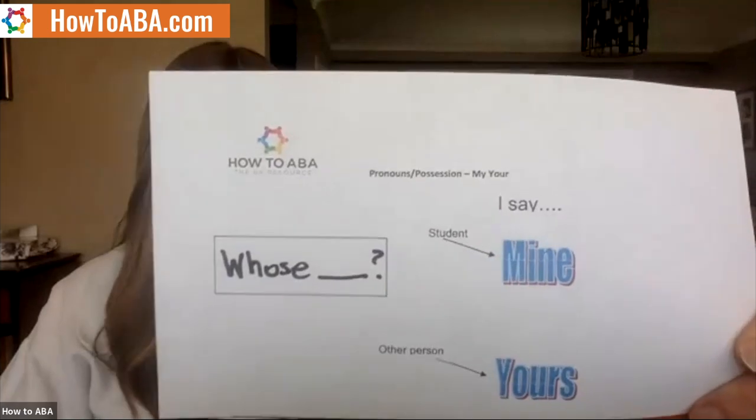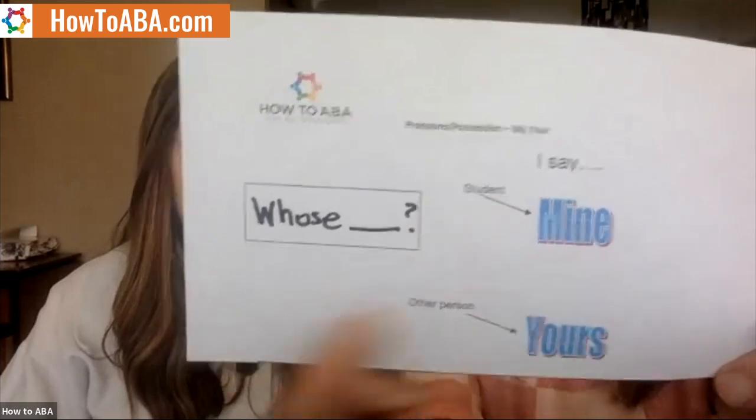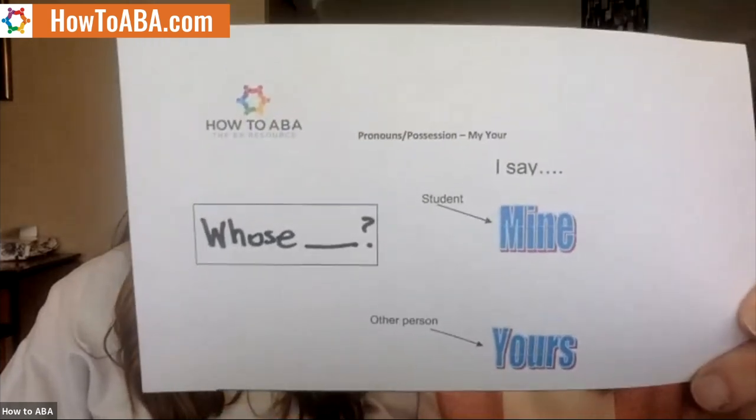That would be the second step. Then after that we would start expressively. After they're able to point to 'show me yours, show me mine,' it would be holding up something and saying 'whose phone?' and they'd have to say 'my phone.' You can even use a text cue — you wouldn't put 'student,' you would put their name — and it would say 'mine' or 'yours.' Fade the text cue using the same teaching step so that eventually you can say 'whose hat?' and they answer 'mine,' 'whose cup?' and they say 'yours.' That would be the step for them to expressively identify items that are mine or yours.